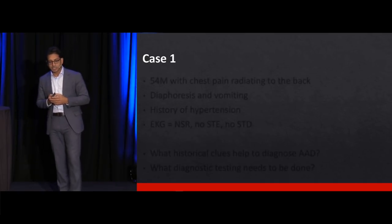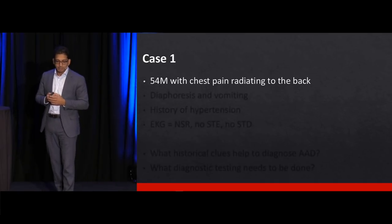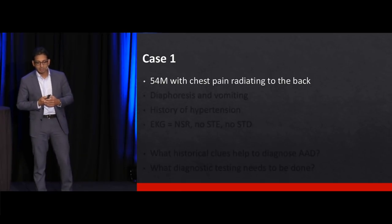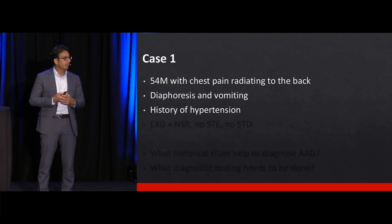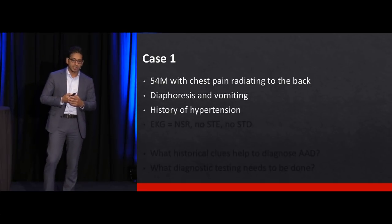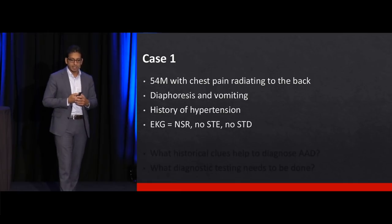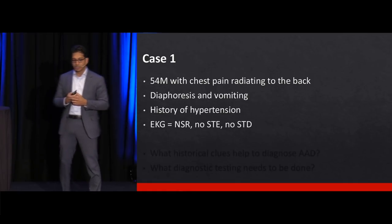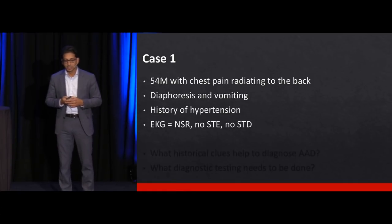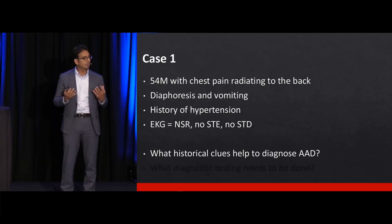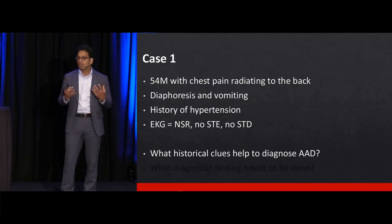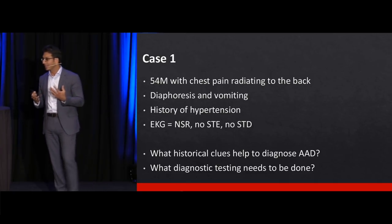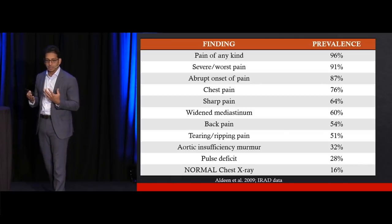Case number one: 54-year-old man with chest pain radiating to the back, diaphoresis and vomiting, history of hypertension, and the EKG shows normal sinus rhythm with no ST elevations or depressions. What are the historical clues that help us diagnose acute aortic dissection, and what diagnostic testing needs to be done?